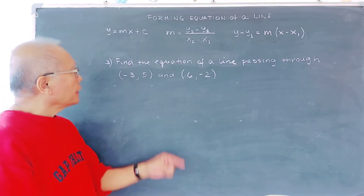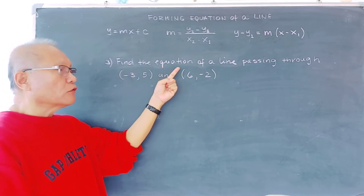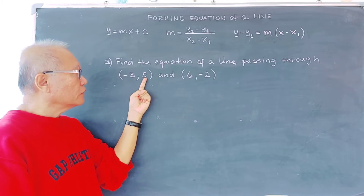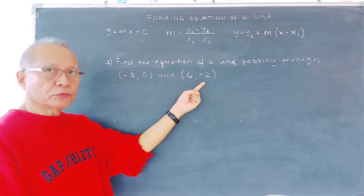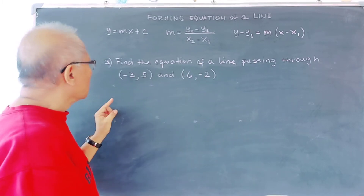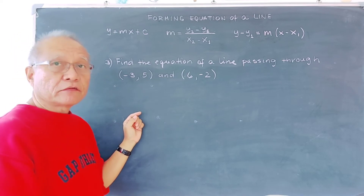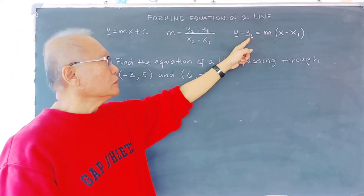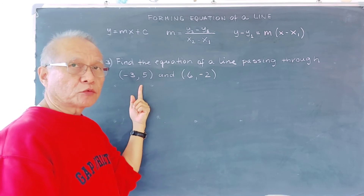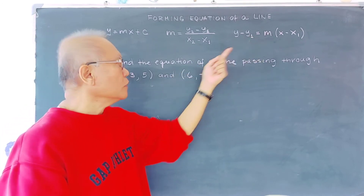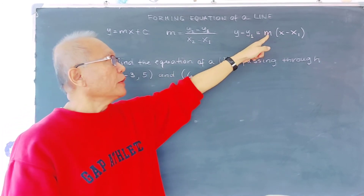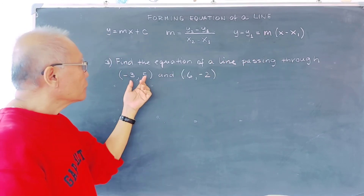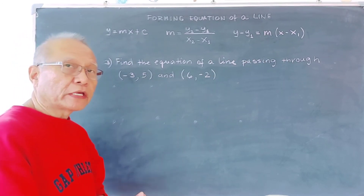Example three: find the equation of a line passing through (−3, 5) and (6, −2). In this problem, we don't have the slope. We have two points, so we need to find the slope first using the slope formula. Without a graphing paper, we use the formula m = (y₂ − y₁) / (x₂ − x₁).